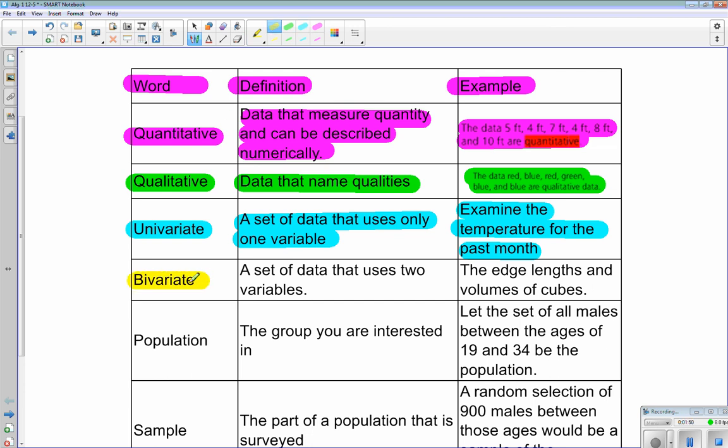Bivariate, just like a bicycle has two wheels, bivariate is a set of data that uses two variables, like the edge lengths and volumes of cubes. So we're collecting data on the lengths, and we're collecting data on the volume of the cube. So it is two variables within the data.